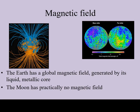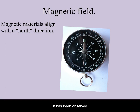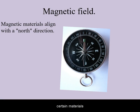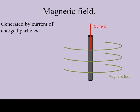Let's explain why the Earth has a global magnetic field, but our Moon does not. It has been observed that around the globe, certain materials tend to align in the direction of North. A magnetic field can be generated by the flow of charged particles.